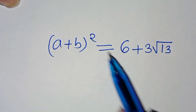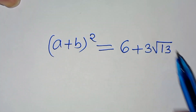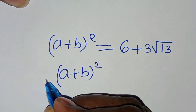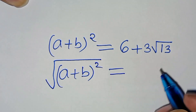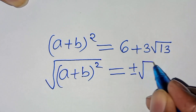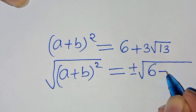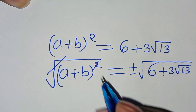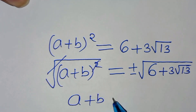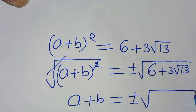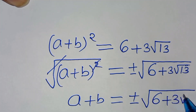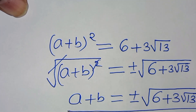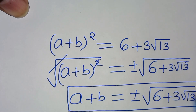With the second case rejected, we have (a + b)² = 6 + 3√13. Taking the square root of both sides: a + b = ±√(6 + 3√13). This is the solution to the algebra problem.